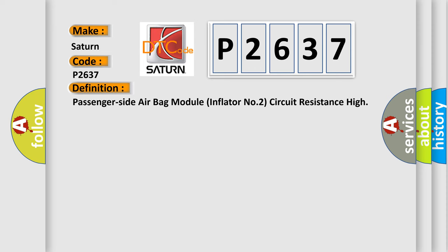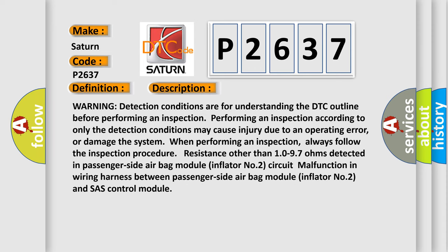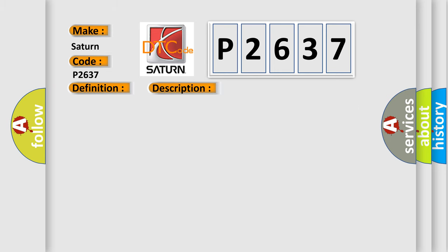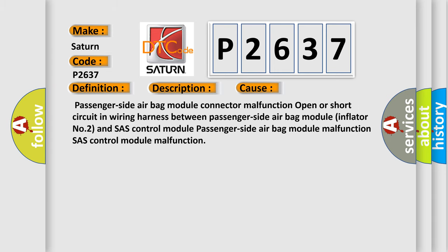And now this is a short description of this DTC code. Warning detection conditions are for understanding the DTC outline before performing an inspection. Performing an inspection according to only the detection conditions may cause injury due to an operating error, or damage the system when performing an inspection. Always follow the inspection procedure: resistance other than 10 to 97 ohms detected in passenger side airbag module inflator number two circuit — malfunction in wiring harness. This diagnostic error occurs most often in these cases: passenger side airbag module, passenger side airbag module connector malfunction.